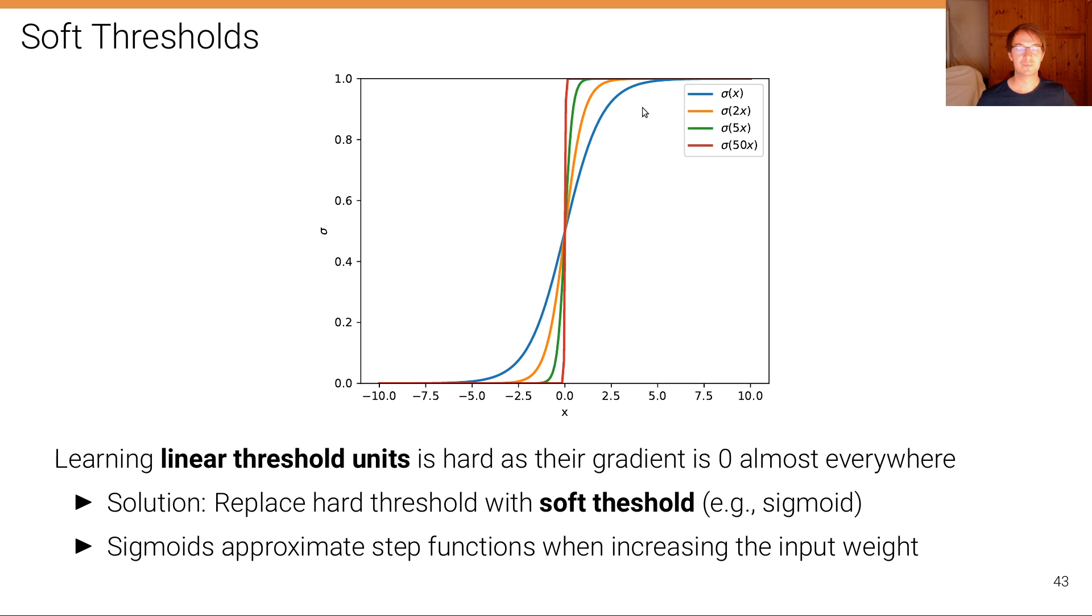And what you can see is that with the sigmoid functions we can actually, in a soft or differentiable way, approximate these non-differentiable step functions by changing the parameters, changing the input weight for instance. So here I've plotted multiple sigmoids. This blue one is the sigmoid that we've seen before, but if we plot sigmoid of 2x we already see that it becomes closer to a step function. If you plot sigma of 5x, then it becomes even closer to the step function, and at 50x it becomes almost indistinguishable from the step function.